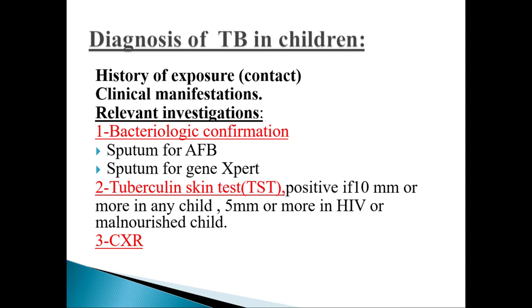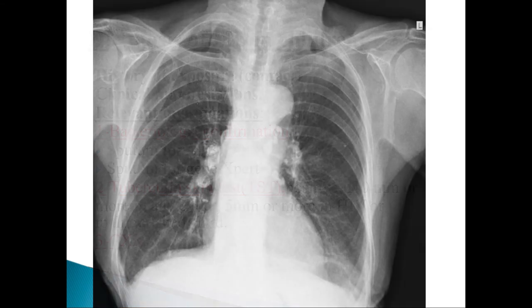A third investigation is the chest X-ray. As you can see, this is a chest X-ray of a child with tuberculosis — the hilar lymph nodes are very clearly visible.